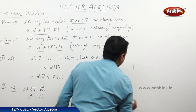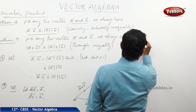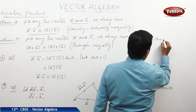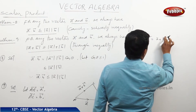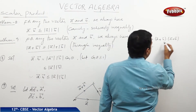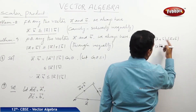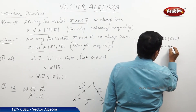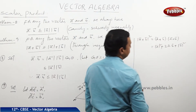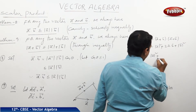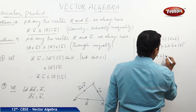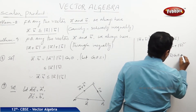We shall consider |a+b|². Now, |a+b|² equals (a+b)·(a+b). By the distributive property, this equals a·a + a·b + b·a + b·b, which simplifies to |a|² + 2(a·b) + |b|². Since a·b = |a||b|cosθ, we can write this as |a|² + 2|a||b|cosθ + |b|².